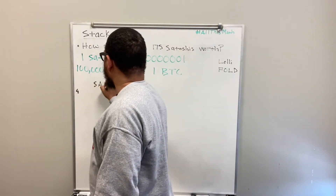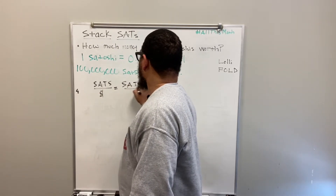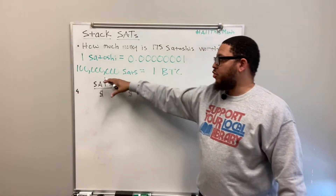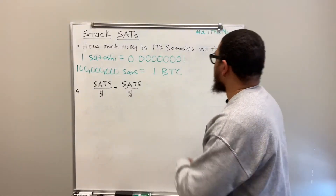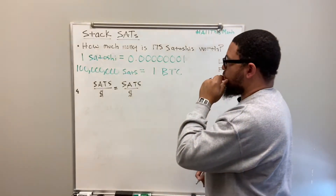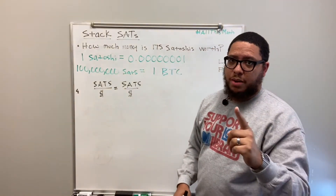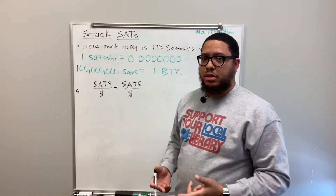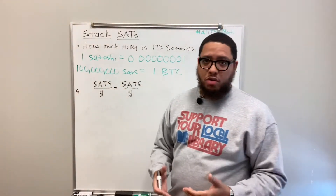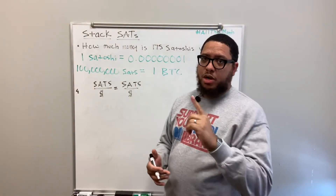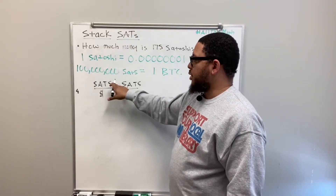Here's the formula for the proportion: satoshis over dollars equals satoshis over dollars. We replace three of the four values with numbers and leave one as a variable. We know that 100 million satoshis equals one Bitcoin. As of April 13th when I'm filming this, Bitcoin was around $63,000. So one Bitcoin equals $63,000.